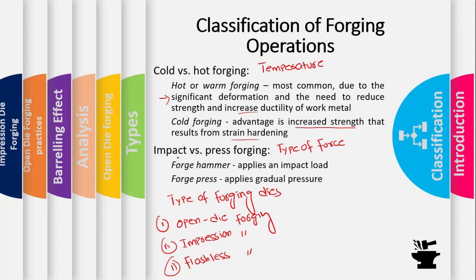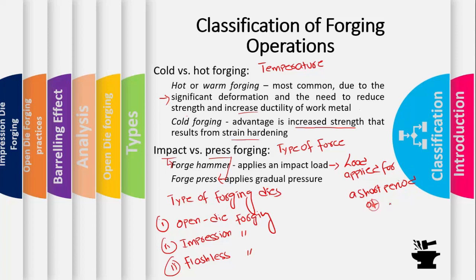Based on the type of force, forging can be divided into two types. The first one is impact forging, performed using a forging hammer. The second one is press forging, performed using a forging press. In impact forging, the load applied on the work part is an impact load — that is, a force applied for an instant or for a short period of time. In press forging, we apply the pressure gradually.